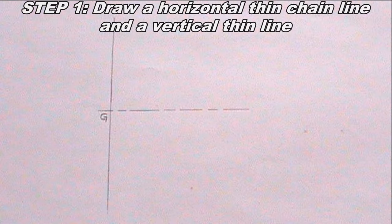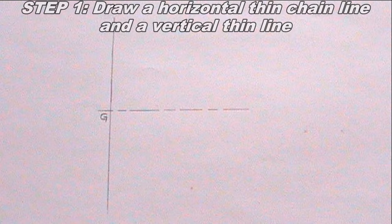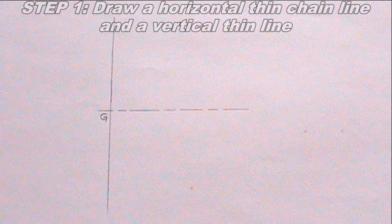To draw a parabola using locus method, the first step to take is to draw a horizontal thin continuous chain line and a vertical thin line. The point where the vertical line intersects the horizontal line should be called G. I have already done this step.